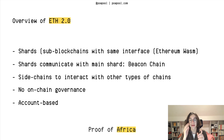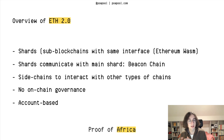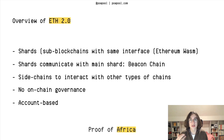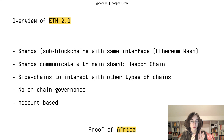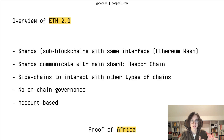They will also use sidechains to interact with other types of networks — for example, Bitcoin, which isn't proof of stake. They will use sidechains to interact with that, so not shards. There's no on-chain governance plan at the moment; they want to continue doing it off-chain through discussions on GitHub. Finally, the chain is account-based, meaning you have one wallet with a private key and public key representing your account — kind of like a bank account where you can send and receive money.